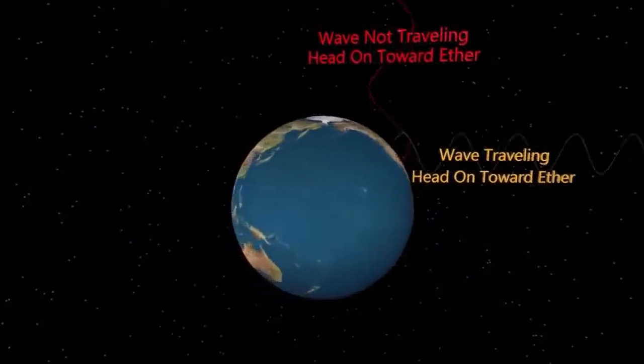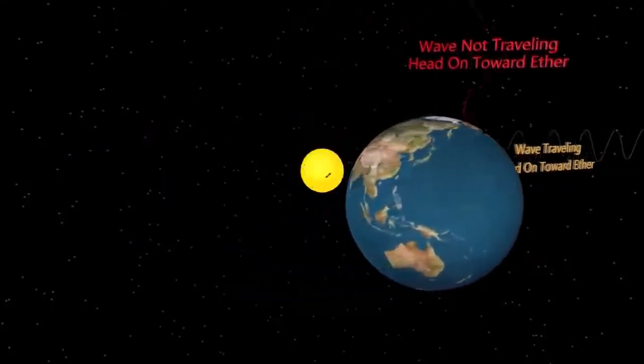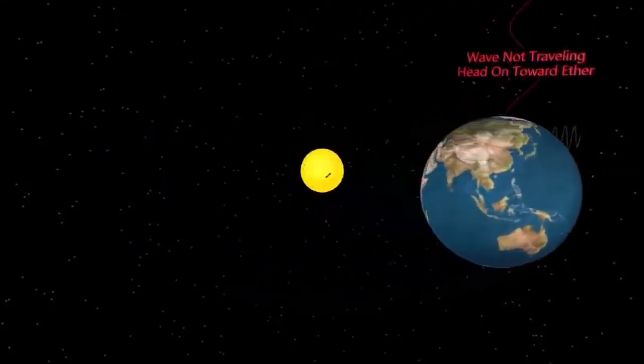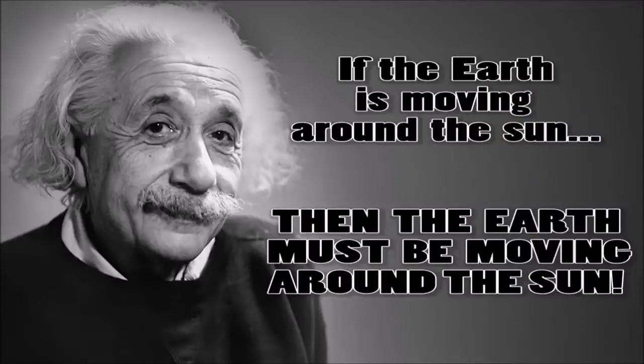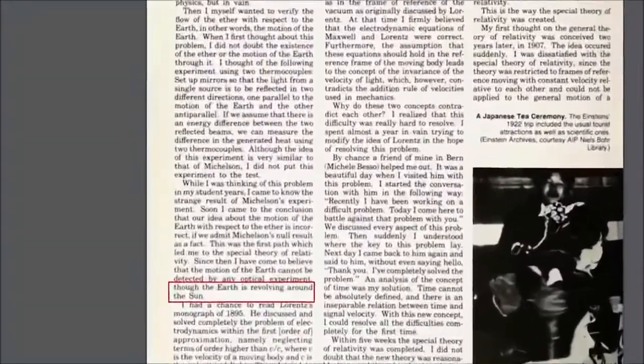Again, the fallacy of Petitio Principii is readily apparent, since he is using an unproven fact, an earth is moving around the sun, as the basis for making the conclusion that the earth is moving around the sun.